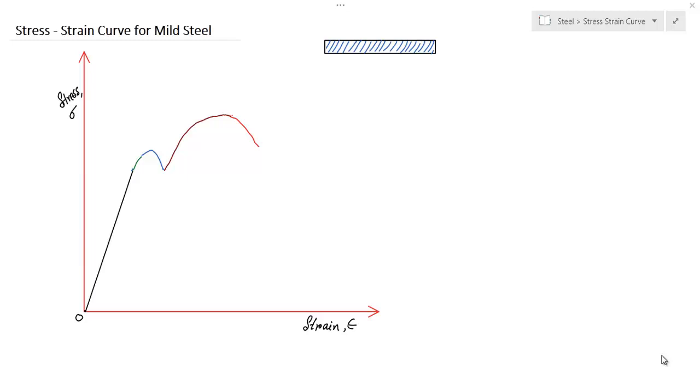Hello everybody, welcome back. In this video we will discuss the stress-strain curve of mild steel. A mild steel rod is subjected to a tensile force and the stress is plotted on the y-axis and strain on the x-axis, and we are getting some curve like this. We will discuss some salient points of the curve in this video.